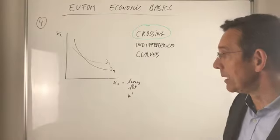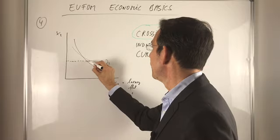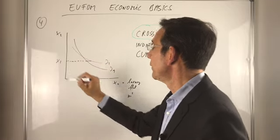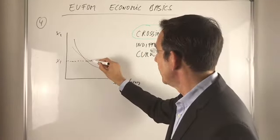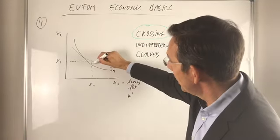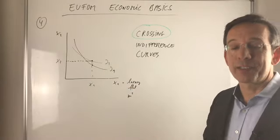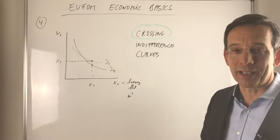That wouldn't be logical because then, for a given level of x2 and a given level of x1, you would have two different utility levels for the same individual. That doesn't make any sense.